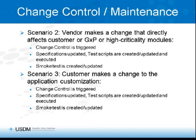Scenario two: the vendor makes a change that directly affects the customer's application or GxP or high-criticality modules. They've sent release notes and you know the change is coming 60 days in advance, so you plan for it. You have it in the staging and testing environment to test against. A change control is triggered, specs are updated, test scripts are created, and if the smoke test is affected it's also updated. Scenario three: the customer makes a change to the application customization — for example, they tweak a particular workflow they control. It's very similar to an in-house change. The change control is triggered, you do an impact assessment, determine what documents need updating and the extent of testing needed, and if the smoke test is affected, you update the smoke test as well.